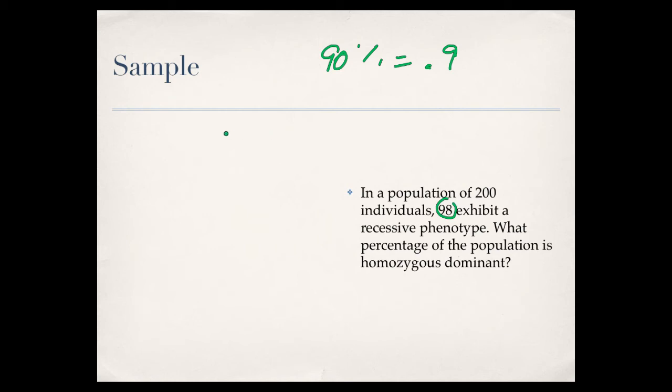All right, so what percentage of our population have the recessive phenotype? So, we know it's 98 out of 200 individuals. So, that means that 0.49 or 49% of our population are little a, little a. All right, so that's the first part. We now know that this is equal to Q squared.